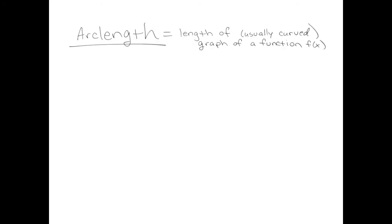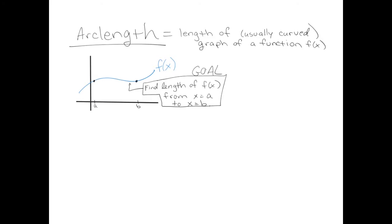First, we're going to focus on the arc length formula. Suppose I graphed a function f of x and I wanted to find the length of the function from x equals a to x equals b. Similar to some previous videos, let's talk about how you could do this using basic concepts and Riemann sums. If we were using Riemann sums, then we would subdivide the x-axis into a bunch of evenly spaced subintervals, and then for each subinterval, we would estimate this curved line with a straight line. As the number of subintervals goes to infinity, the smaller the subintervals are, the closer the straight-line approximation is to the curved line.